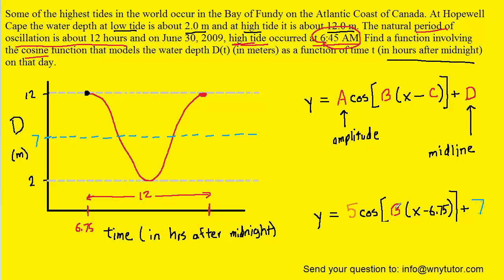The only letter left to find is uppercase B. B is equal to 2π divided by whatever the period of your cosine curve is. Earlier we said the period was 12 — the distance along the x-axis from the starting point to the finishing point of the cycle. So we plug in 12 for the period, giving us 2π over 12. Reducing by dividing numerator and denominator by 2, we get π over 6. That becomes the value of B.